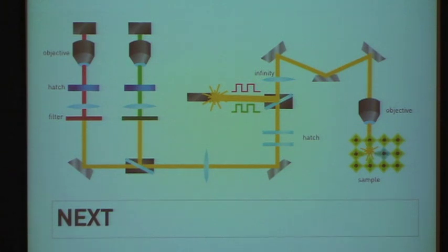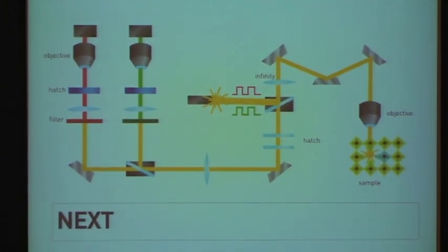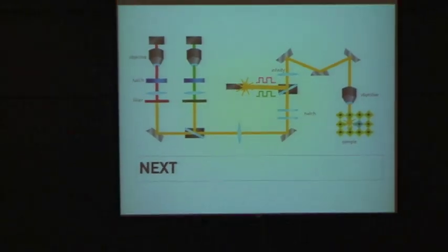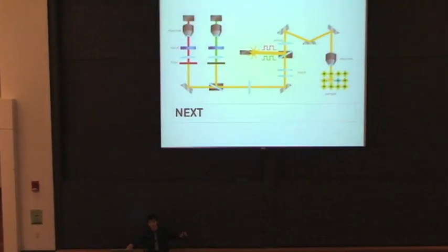We can then turn on a detector, an avalanche photodiode, and wait for these NV minus centers to re-emit these electrons, then we can get counts of how many NV minus centers there are.